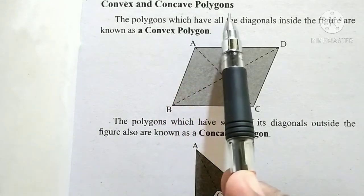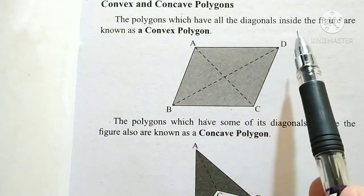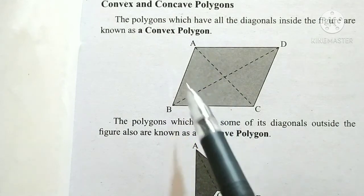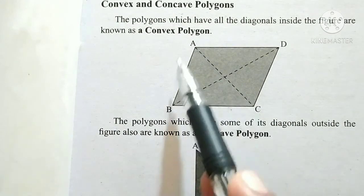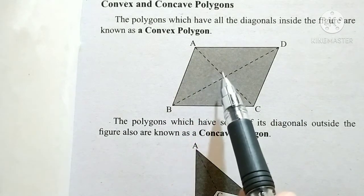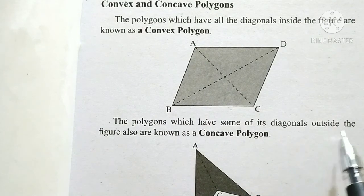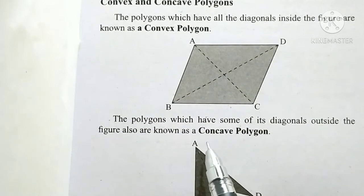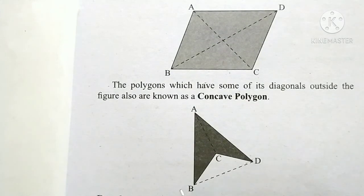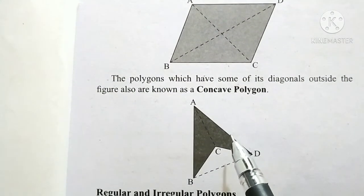Convex and concave polygons: polygons which have all their diagonals inside the figure are known as convex polygons. A polygon which has some of its diagonals outside the figure is known as a concave polygon. In a concave polygon, one diagonal lies outside the figure.